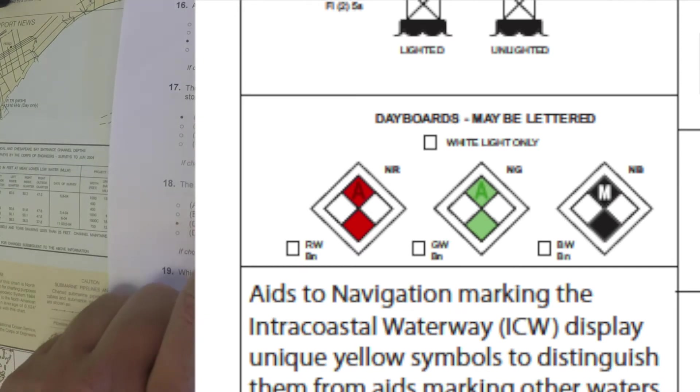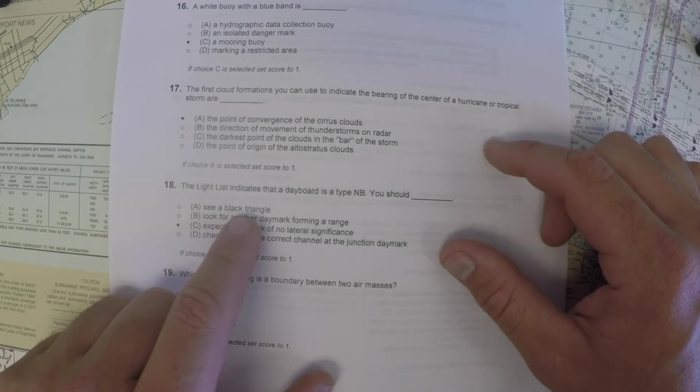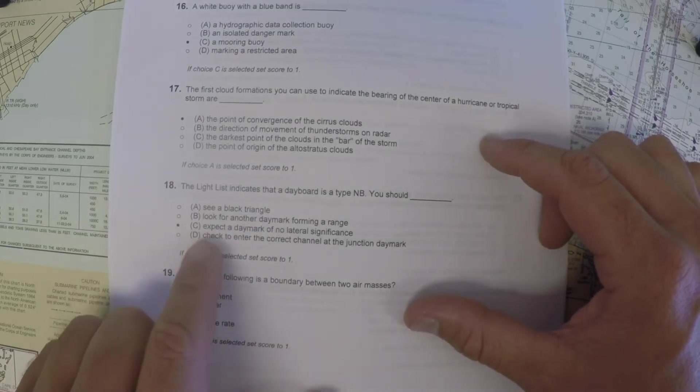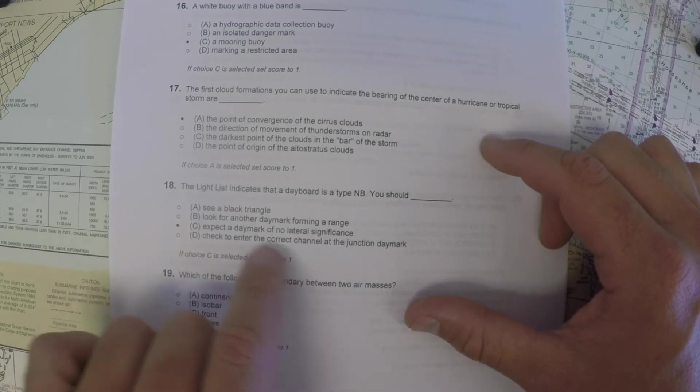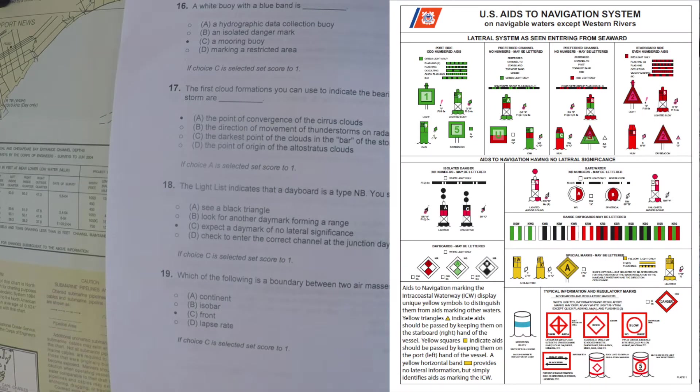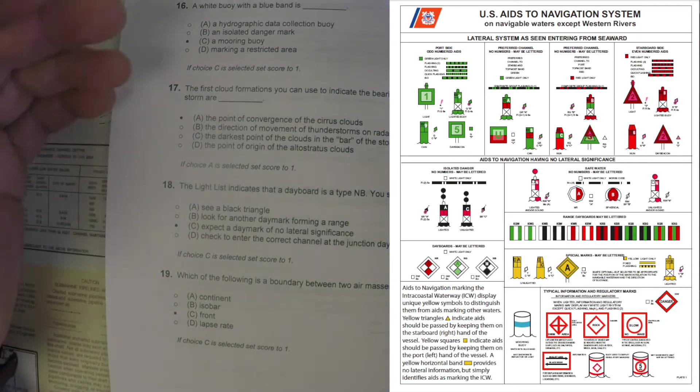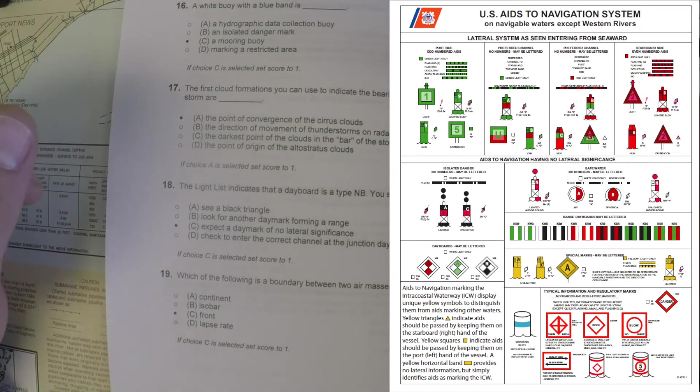So it can be tricky because it's a black diamond, but it's not a black triangle. So that's easy to get confused. It's not part of a range, and it's not the correct channel. It's a day mark of no lateral significance. It's generally kind of like an X marks the spot thing on a chart. So I haven't seen a lot of them in my time on the areas that I've sailed. They might be out there, but according to the light list, November Bravos have no lateral significance.